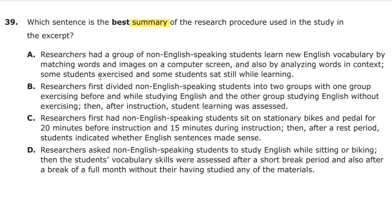Answer B: Researchers first divided non-English speaking students into two groups — one exercised and one studied English without exercising. Then after instruction, students' learning was assessed. Before they selected the students, but we'll see if any answer even includes that. That's correct, and it gives an order of events — 'first' and 'then' — this is a progression. B could well be our right answer here.